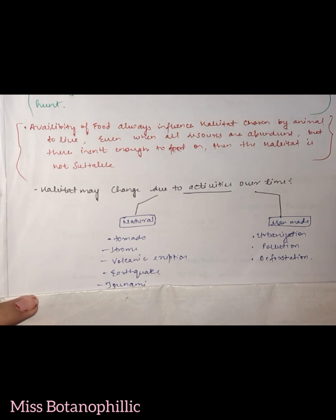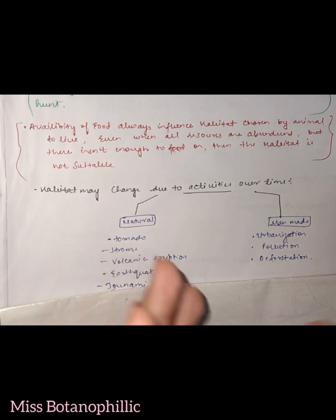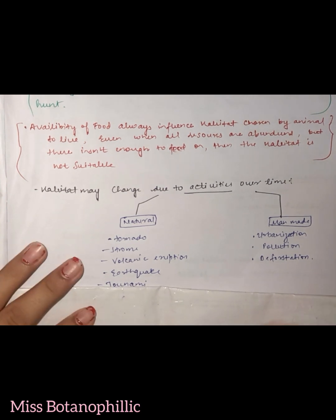If cockroaches have a particular group living in your kitchen, and you spray Hit, which is very common, you have destroyed its habitat. This is something man-made. But what is the other condition?